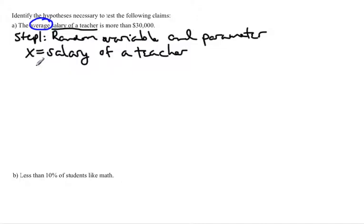The parameter again is mean. So it would be the mean salary of a teacher. Then we just have to put in what the symbol is for mean. So the symbol for mean is mu. Looks like a U with a little line on the front of it. So that's our first step of every hypothesis test.